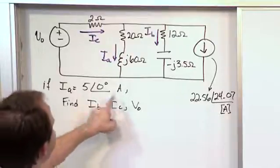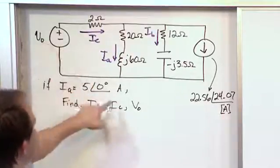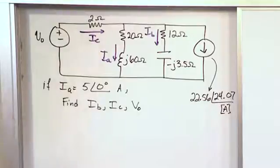then find Ib, Ic, and V0, all as phasors. So really boil the problem down.